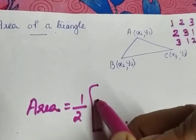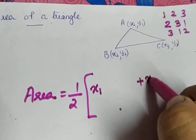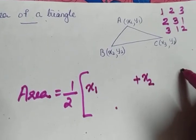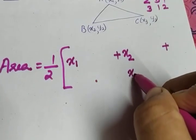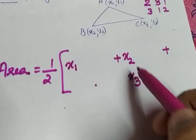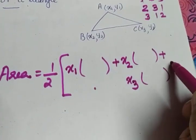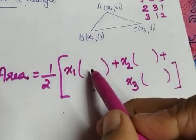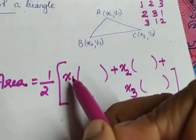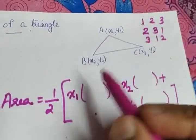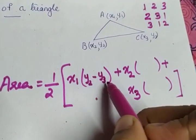We start with the x-coordinate. There are three terms — the first term starts with x1, the second term starts with x2, and the third term starts with x3. Inside the bracket for each term are y-terms — two y-terms each. This is an easy way to remember the formula. After 1 it is 2 and 3, so the bracketed term for x1 is y2 minus y3.